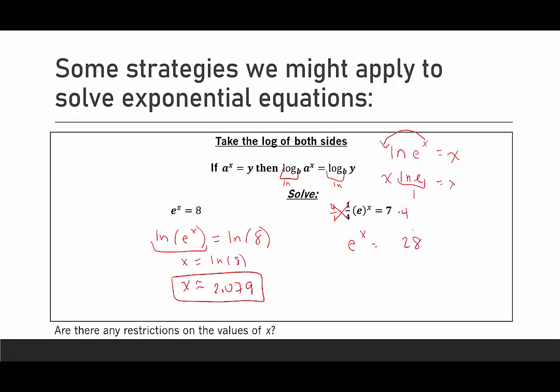Now that I have my base e all by itself, I can take the natural log of both sides. Remember, we specifically want to use natural log to counteract that base e. The natural log of e^x is just x, and ln of 28 is approximately 3.332. So a fun strategy that we could use here that does save a little bit of time.